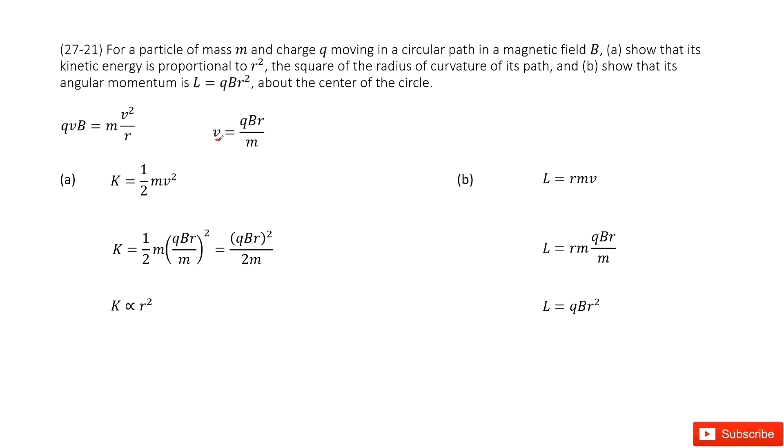Next we need to show the kinetic energy is proportional to r squared. So now we write down the function for kinetic energy, one half mv squared, and input v inside and then simplify it. We get the answer there.